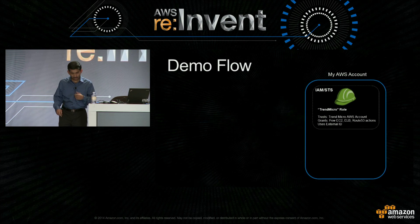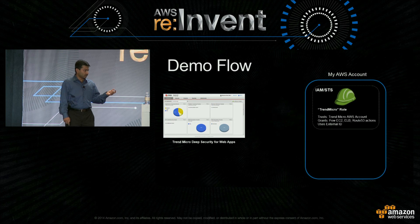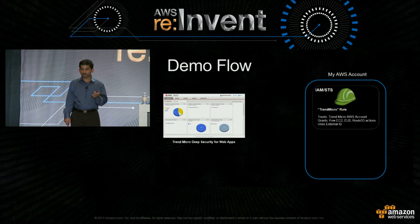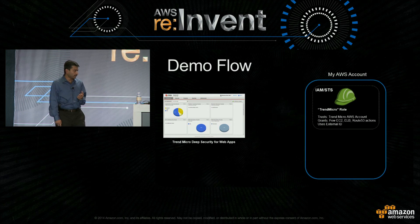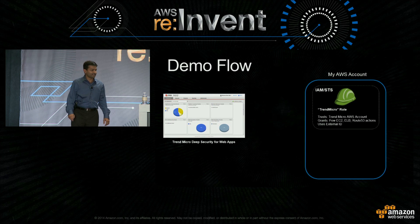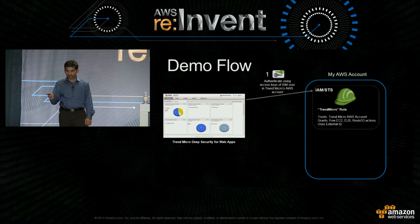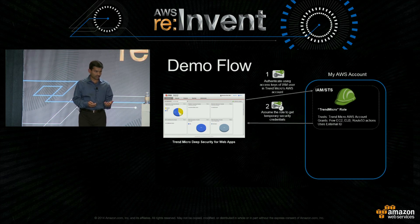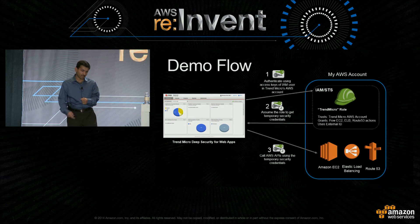Let's see this in action. I have my account with a role created, and I'm going to use one of our partner offerings. Trend Micro has an offering called Deep Security for Web Apps — it provides security scanning for web applications running on AWS. I want to use Trend Micro, but I'm not going to share my access key ID and secret access key with them. Neither should you, for any partner. So I created a role and trusted the Trend Micro account, gave it some permissions. The IAM user in the Trend Micro account will authenticate, assume the role, get back temporary security credentials, and use those to access the account.